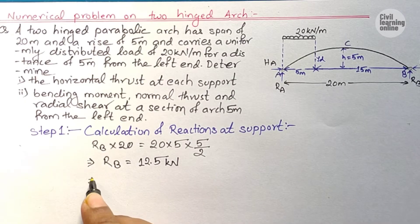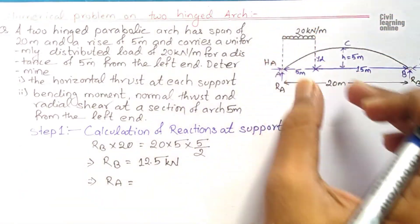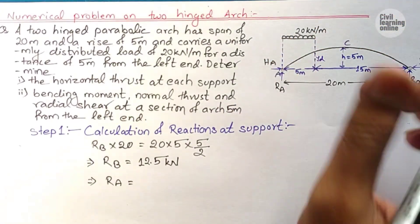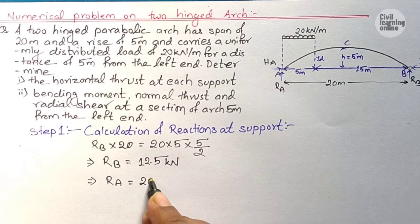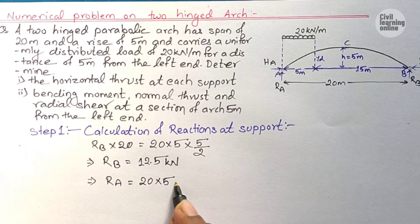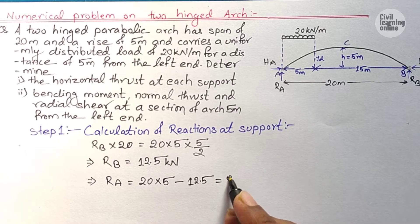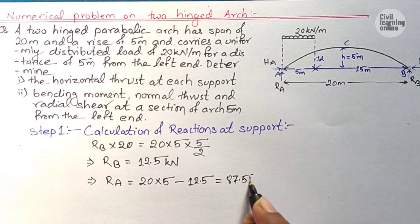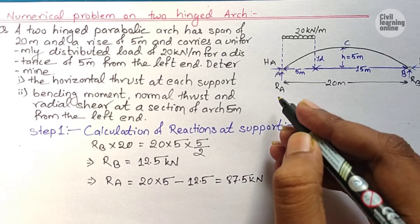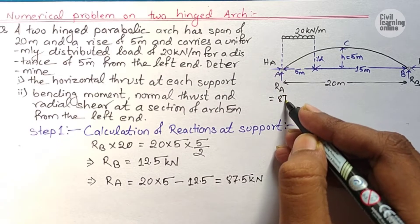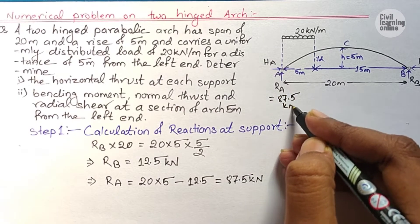For the reaction at support A, applying vertical equilibrium — upward force equals downward force: Ra = 20 × 5 − 12.5 = 87.5 kN. So we have successfully calculated Ra = 87.5 kN and Rb = 12.5 kN.